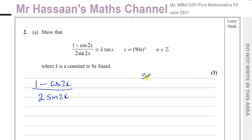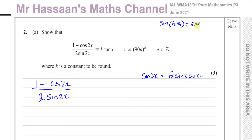For sine 2x, the only way it splits up is into 2 sine x cosine x. This is something you should know. It's derived from the formula book identity sine(A+B) = sin A cos B + cos A sin B. If both angles are x, sine 2x = sine x cosine x + cosine x sine x, which gives 2 sine x cosine x.